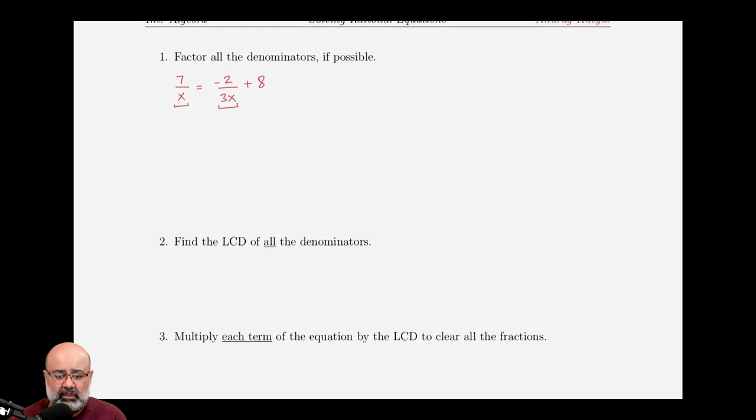Find the LCD of all the denominators. So I have two denominators here, x and 3x. To get rid of this x, I need to put an x on top. To get rid of this 3, I need to put a 3 on top. To get rid of this x, I already have an x on top, so I don't have to include another one. So my LCD then is 3x.